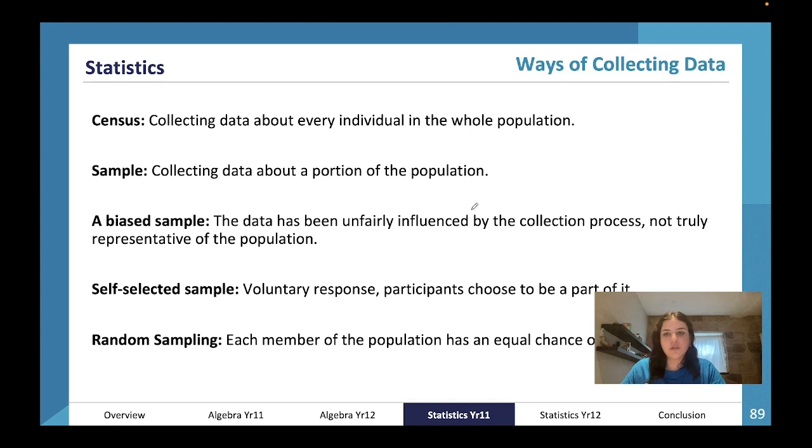We also have different ways of collecting data. We can collect data about every individual in the whole population by doing a census. We have an Australian census that runs every four years. That's a very uncommon way of collecting data because you have to collect about every individual in the entirety of a population. What we're more likely to see is a sample—collecting data about a portion of the population, like sampling ten people from each community.